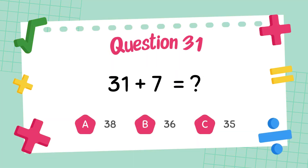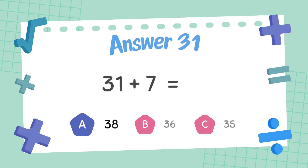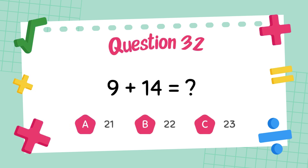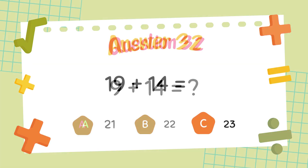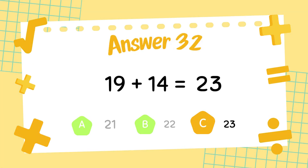What is 31 plus 7? The answer is 38. What is 19 plus 14? The answer is 23.